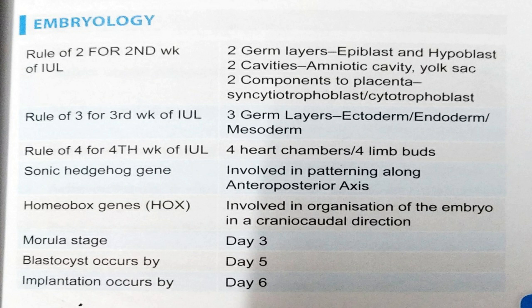In the second week of life we have two germ layers — syncytiotrophoblast and cytotrophoblast. And in the third week of intrauterine life we have three germ layers — rule of three: ectoderm, endoderm, and mesoderm.